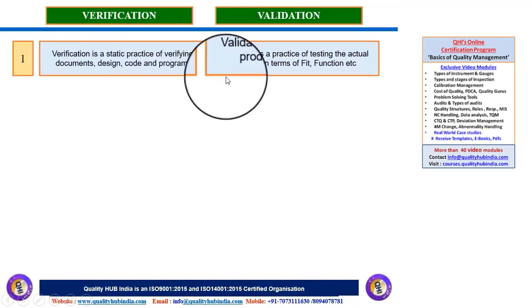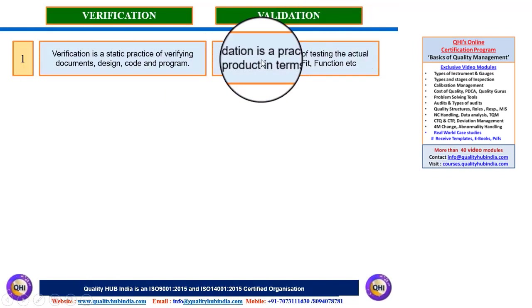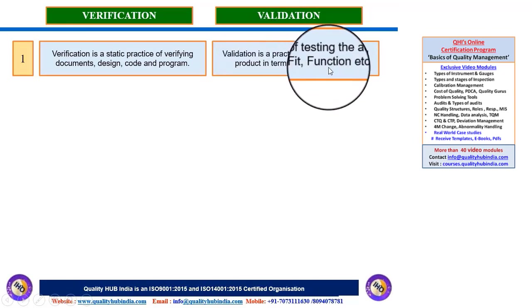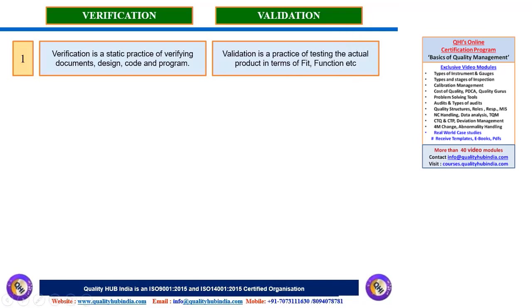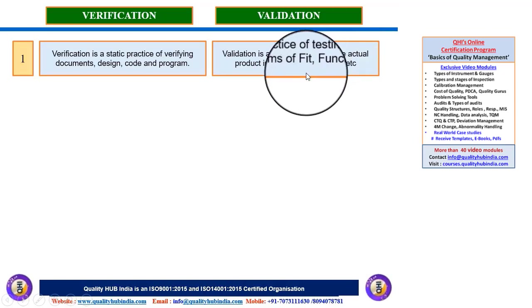On the other hand, validation fulfillment is done through fitment and functional trials. That means whether the actual applicability of the product or services meets the customer's requirement needs to be verified, and that cannot be checked by dimension alone. We need to use the product in an actual scenario to perform some sort of testing.